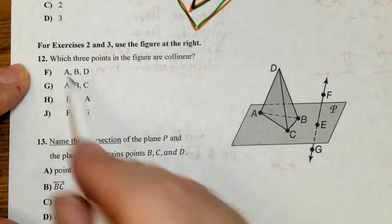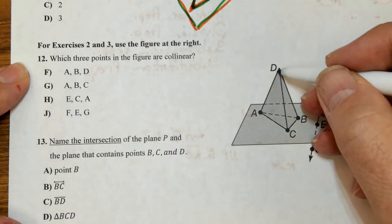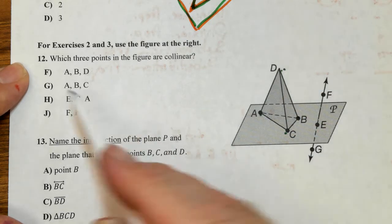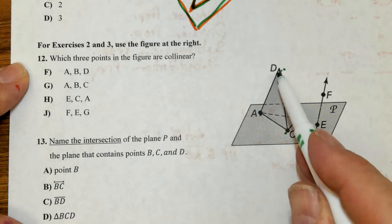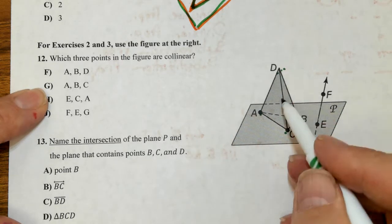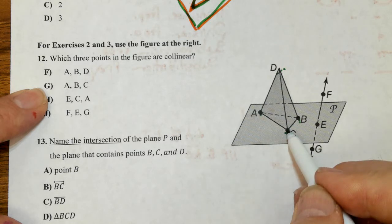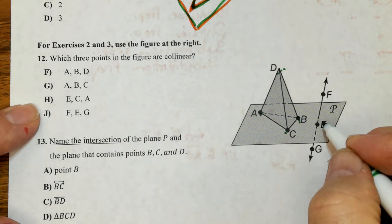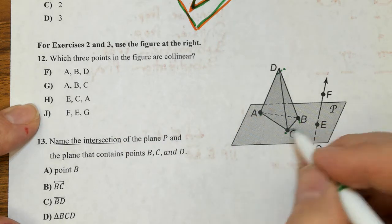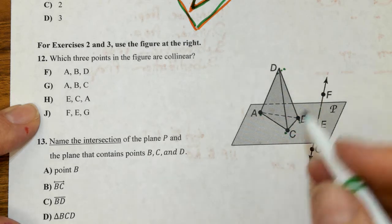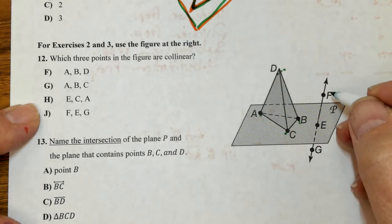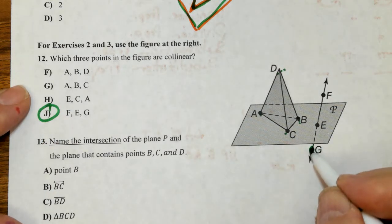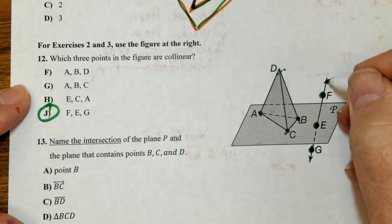Number 12. It's asking which three points in the figure are collinear? Let's look at this. A, B, D are not collinear. They're on the same plane, but they're not collinear. A, B, C are not collinear. They're on the same plane P. E, C, A. Again, they're on the same plane P, but they're not collinear. So F, E, G is the only one that could work. That one works. They're collinear. There's my G. There's my E. There's my F. They're along this line.